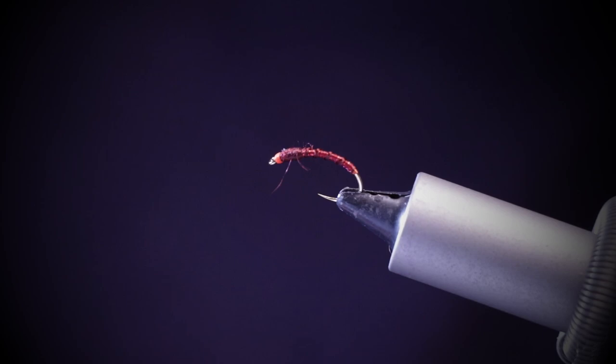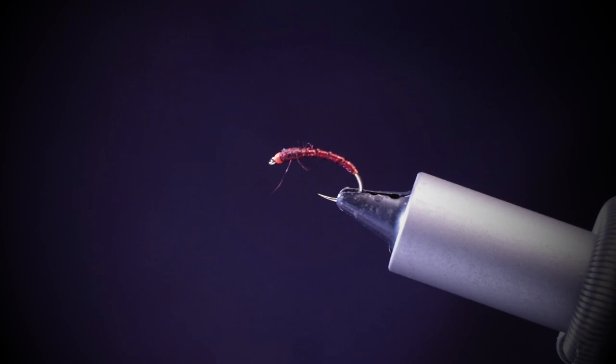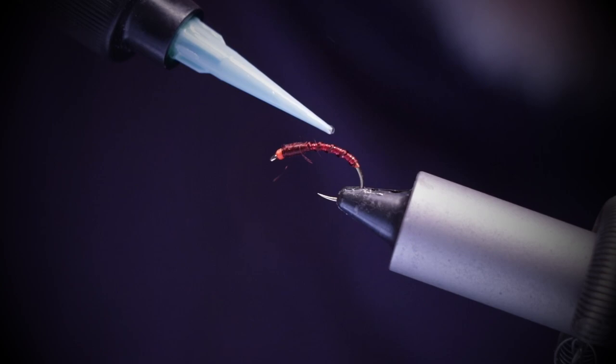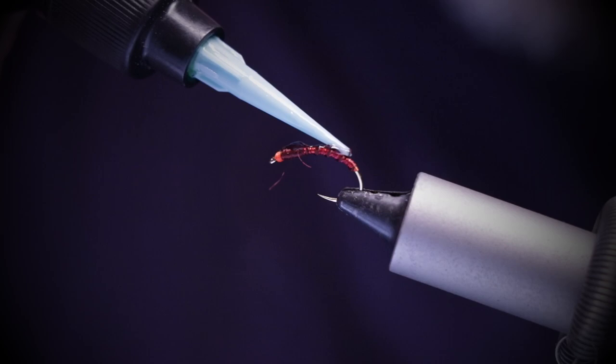The next step is take the Loon or any clear UV varnish that you've got that's thin and just apply a light coat. You don't want to go too heavy. The last thing you want to do is overdress your buzzers.